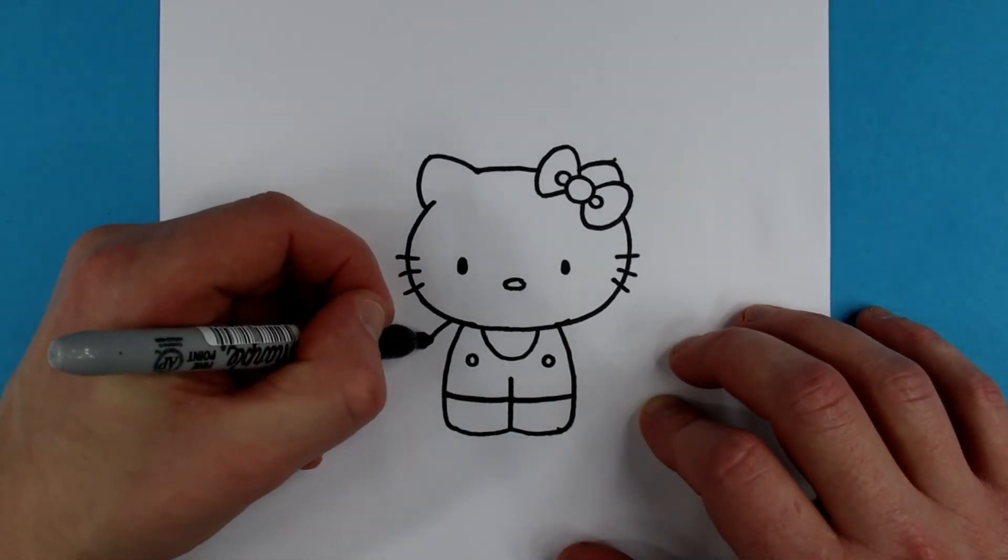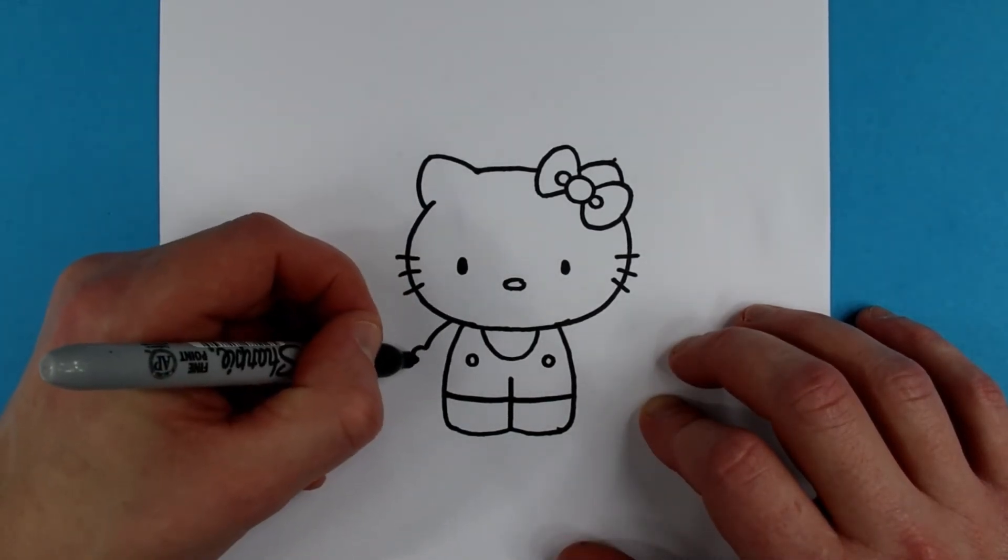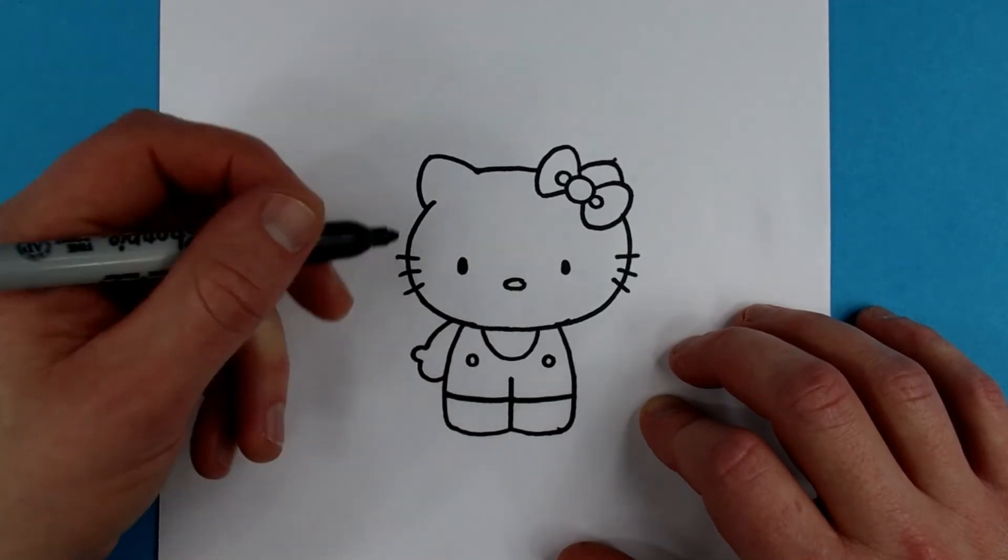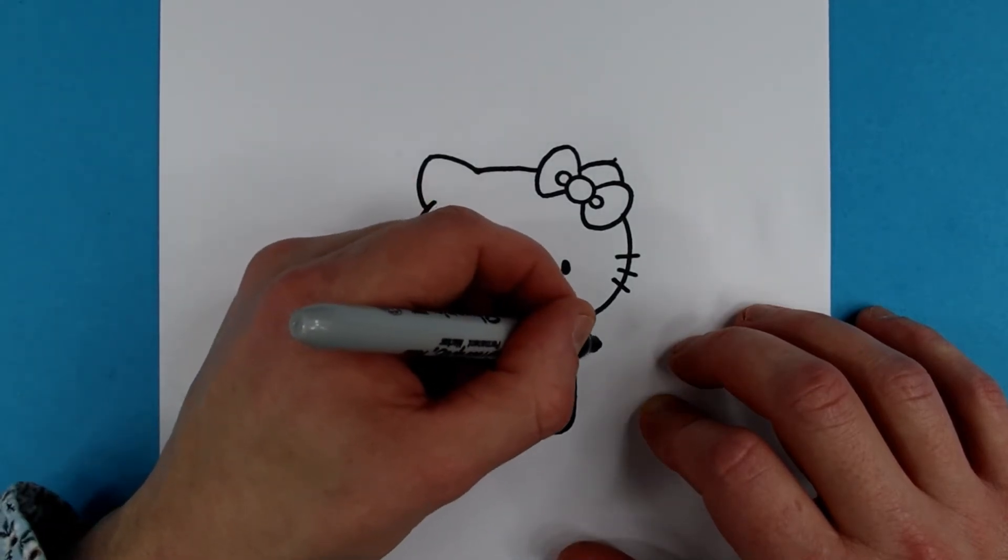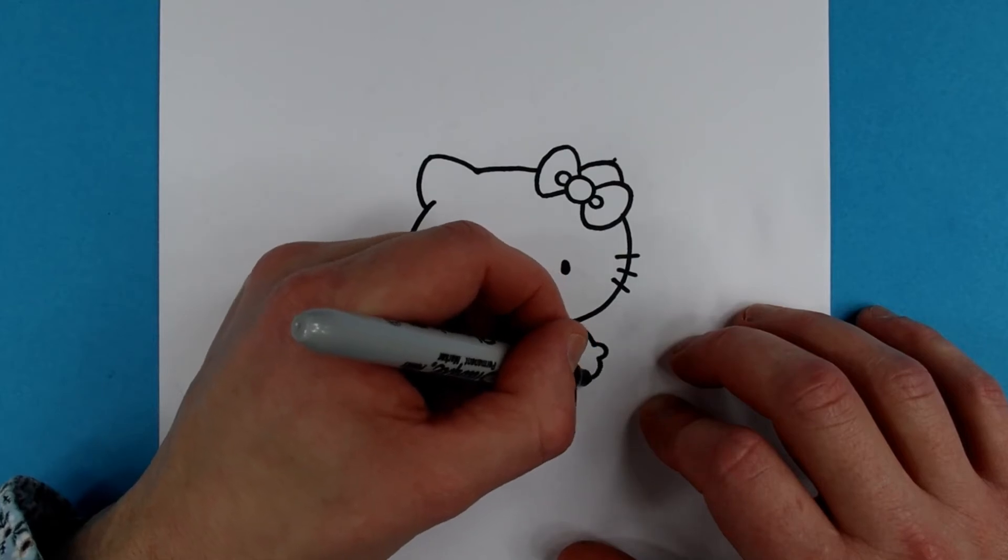And for the arms, a curve like this. A little thumb and the rest of her hand. The other side the same. Curve, thumb, and a hand.